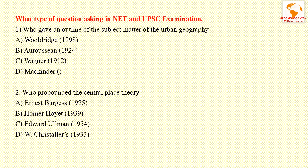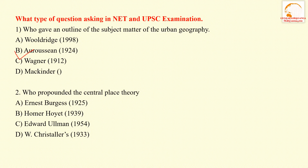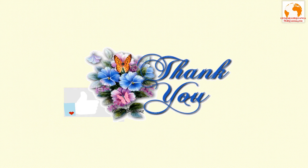Let us see what type of questions are asked in NET and UPSC examinations. Question one: who gave the outline of the subject matter of urban geography? The correct answer is Arasios. Next question: who propounded the Central Place Theory? The answer is Walter Christaller in the year 1933. Thank you friends, see you in the next lecture.